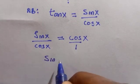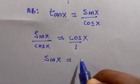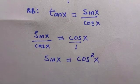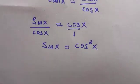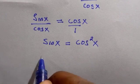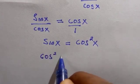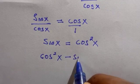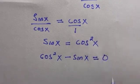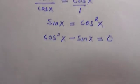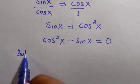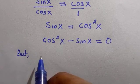By cross multiplying, we have sin X multiplied by 1 equals cos X multiplied by cos X, that is cos squared X. Collecting everything to one side gives us cos squared X minus sin X equals 0. Looking at these, they are not identical.